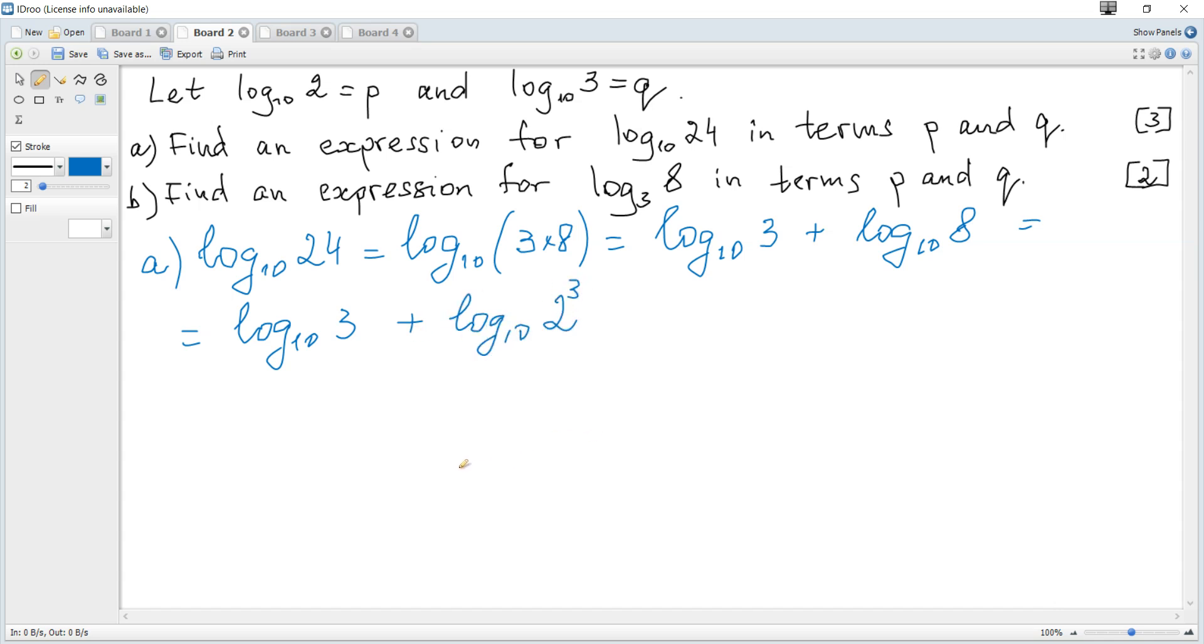Using another formula which is also given in a data booklet, that log to the base a of b to the power n is equal to n multiplied by log to the base a of b, it becomes log to the base 10 of 3 plus 3 times log to the base 10 of 2. And finally it's q plus 3p.